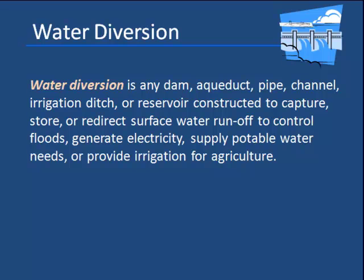That can be as simple as drinking water, or as elaborate as hydroelectric power. Most often it's used for irrigation and to have a known supply of water for an area. We're going to talk a little bit about water diversion and some of its benefits and some of its drawbacks for the environment.